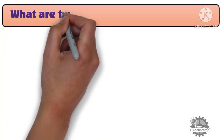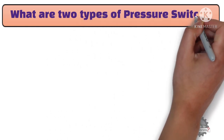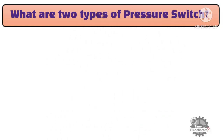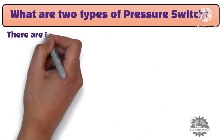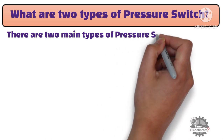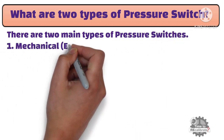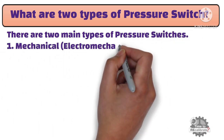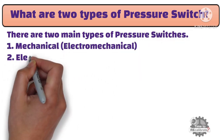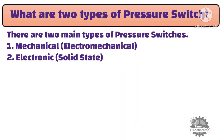First of all, what are the two types of pressure switch? There are two main types: first is mechanical or electromechanical, and second is electronic or solid state.